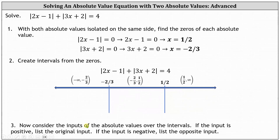Step three: we consider the inputs of the two absolute values over the given intervals. If the input is positive, we list the original input; if the input is negative, we list the opposite input. For the open interval from negative infinity to negative ⅔, the input 2x minus 1 is negative whenever x is less than 1½, so we list the opposite: negative (2x minus 1). Also, 3x plus 2 is negative whenever x is less than negative ⅔, so over this interval we list the opposite: negative (3x plus 2).